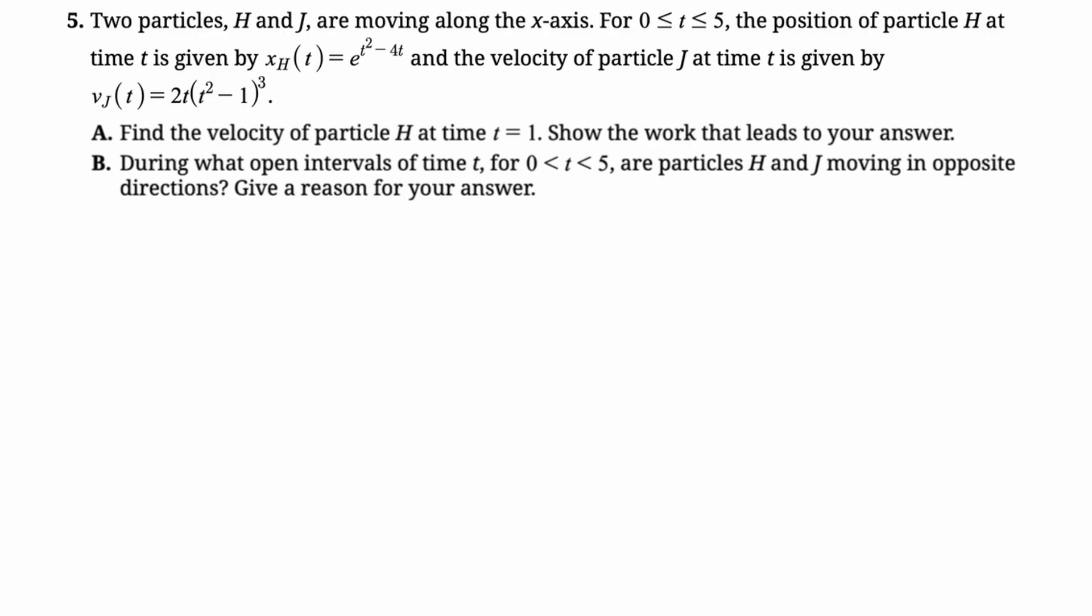For A, find the velocity of the particle H at the time t equals 1. So the first thing that we're going to do is we're going to say that our velocity is the derivative of position. So they started requiring that a couple years ago, so make sure that you are doing that. So v_H(t) is x'_H(t). Now we're going to find the derivative of this. This is a chain rule problem. So the derivative of e^u is e^u times the derivative of u. So times the derivative of t²-4t, which is the quantity 2t-4. So we have this. Now we just need to evaluate this at 1.